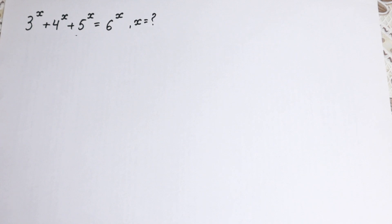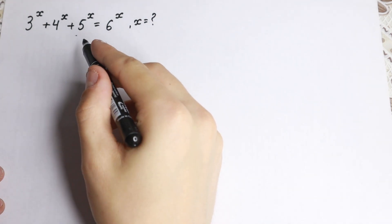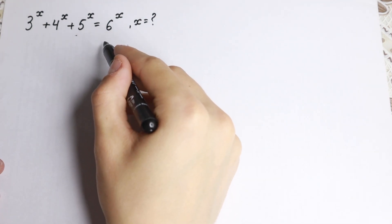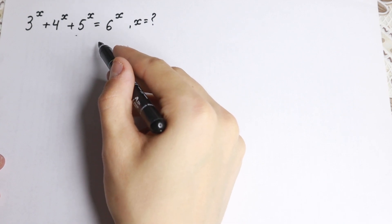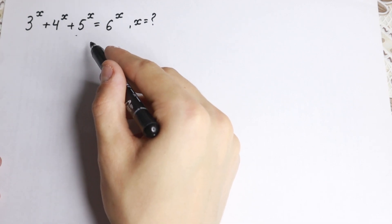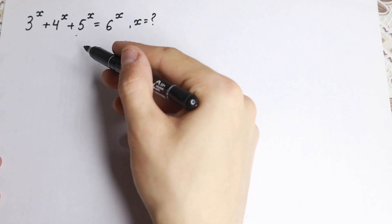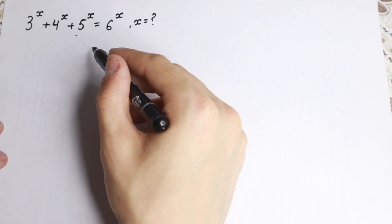Hello everyone, welcome back to Higher Mathematics and happy to see you here. Really interesting exponential equation today: 3 to the x plus 4 to the x plus 5 to the x equal to 6 to the power x. How can we solve this interesting problem? There are a lot of approaches, but I want to show you my really interesting tricky method right here.